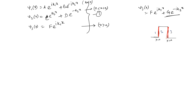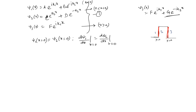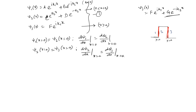Now we apply the boundary conditions. At x = 0 (boundary between Regions 1 and 2): ψ₁(0) = ψ₂(0) and dψ₁/dx|₀ = dψ₂/dx|₀. At x = a (boundary between Regions 2 and 3): ψ₂(a) = ψ₃(a) and dψ₂/dx|ₐ = dψ₃/dx|ₐ.